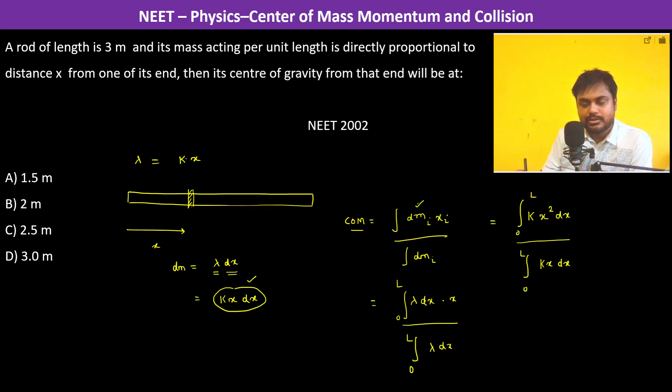And it is at a distance of x from this end, so we're multiplying it. And that's why we got this. k cancels out, so this is x cubed by 3 divided by x squared by 2, from 0 to L.